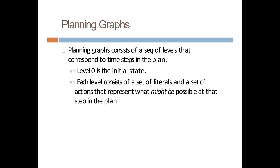A planning graph consists of a sequence of levels that correspond to time steps in the plan. Level 0 will be your initial state. Each level will have a set of literals and a set of actions that represent what might be possible at that state in that plan.